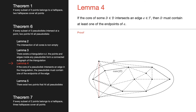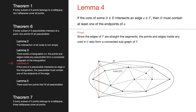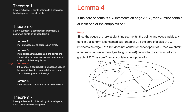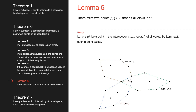Lemma 4: if the core of some pseudodisk intersects an edge of the triangulation, then the pseudodisk must contain at least one of the endpoints of the edge. Proof: the points and edges inside any core also form a connected subgraph of the triangulation. If the core intersects an edge but does not contain either endpoint, we obtain a contradiction since the edges inside the core cannot form a connected subgraph of the triangulation, as shown in the image.